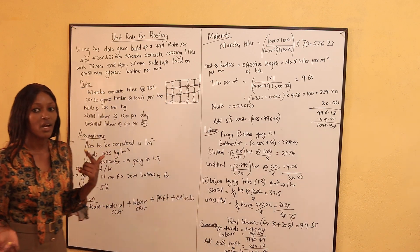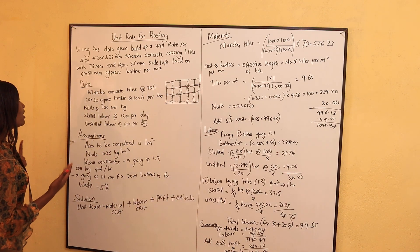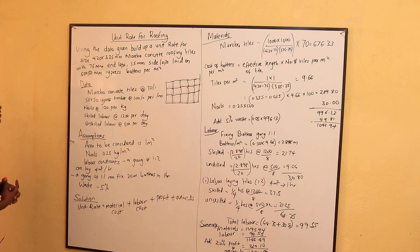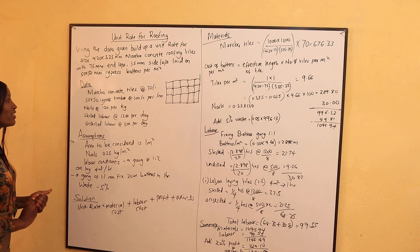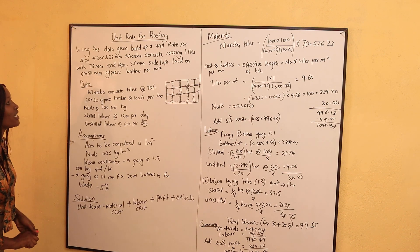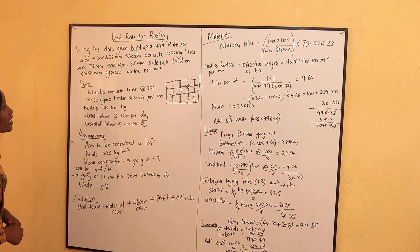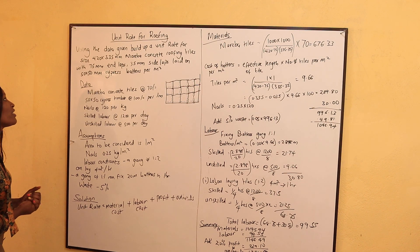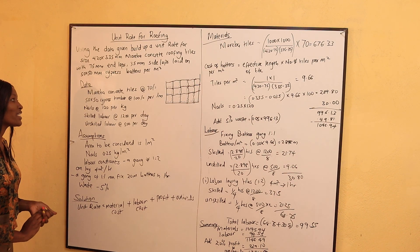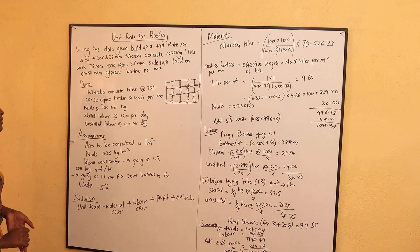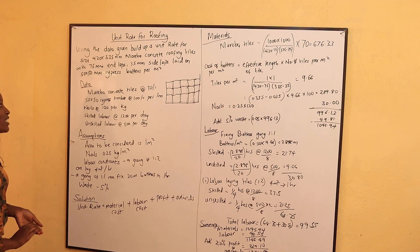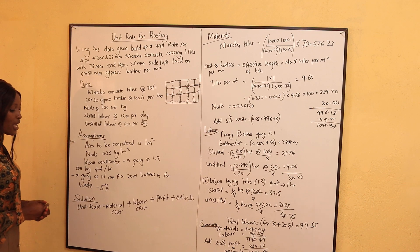You'll be given a question like: using the data given, build up a unit rate for size 420 by 335 mm Mareba concrete roofing tiles with 75 mm end-lapse and 35 mm side-lapse, laid on 50 mm cypress buttons per meter squared.